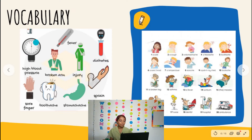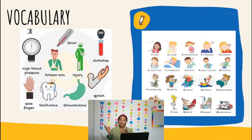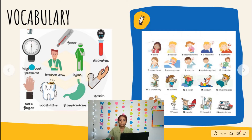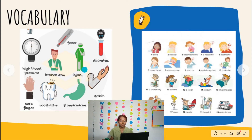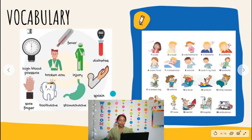We have here some of the health problems. Remember that I'm going to pronounce these and you need to repeat after or with me. The first one: high blood pressure, broken arm, fever, injury, diabetes, sore finger. And on this other side I have some other words.